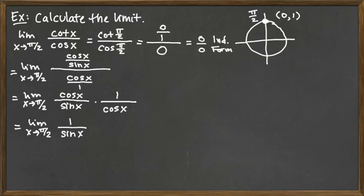Now that that problematic factor has canceled, we're ready to try the limit again by plugging in. We're looking at 1 over sine of π/2. Sine of π/2 is the Y coordinate from that ordered pair of the unit circle, so that's going to be 1. We're looking at 1 over 1, so our final answer for this limit after we use the cancellation property is 1.